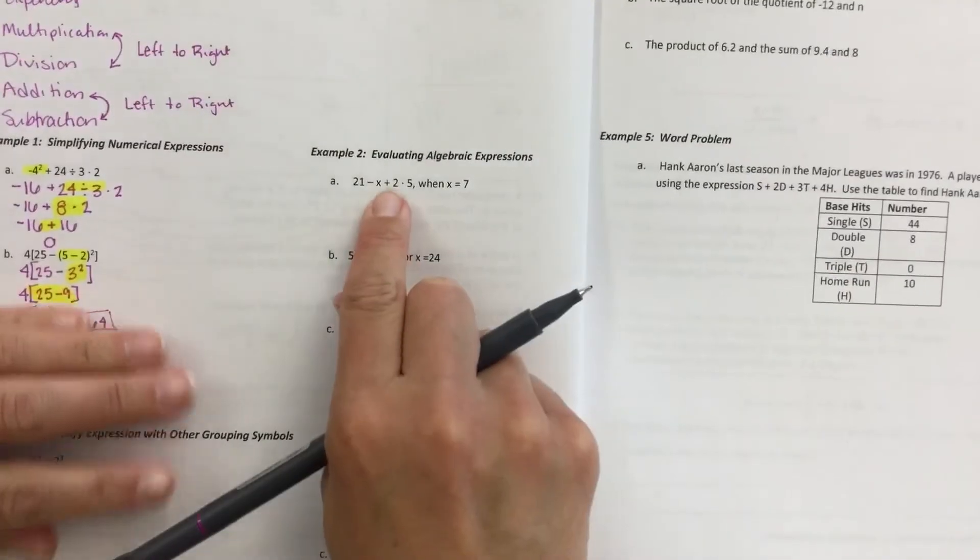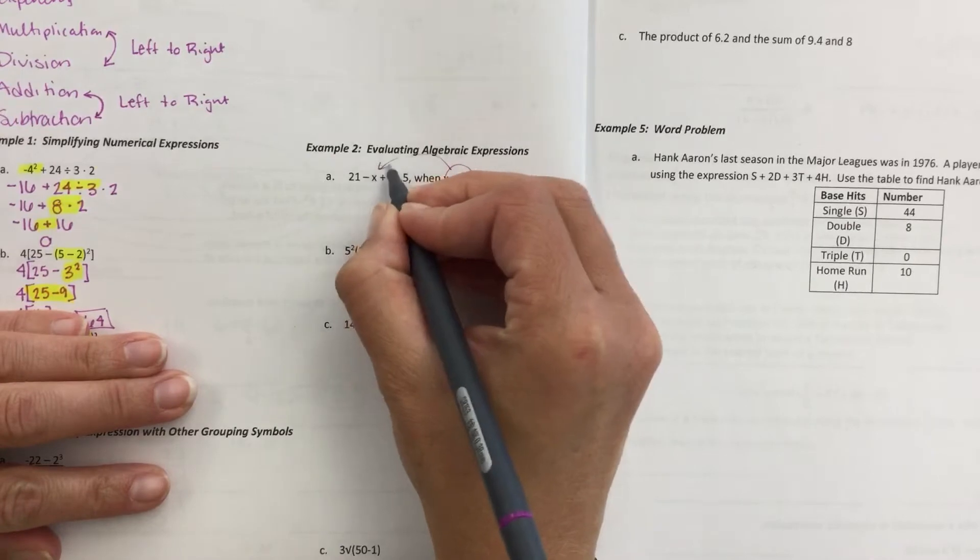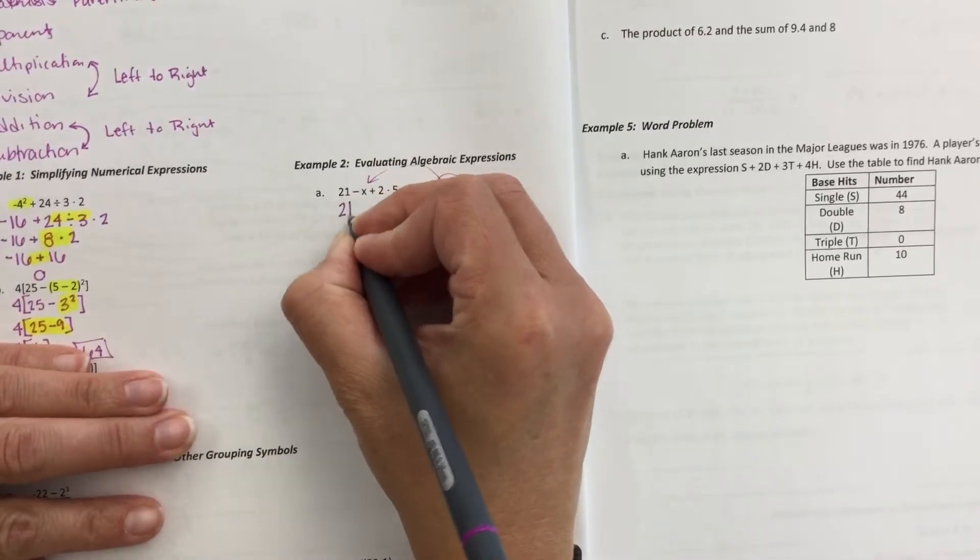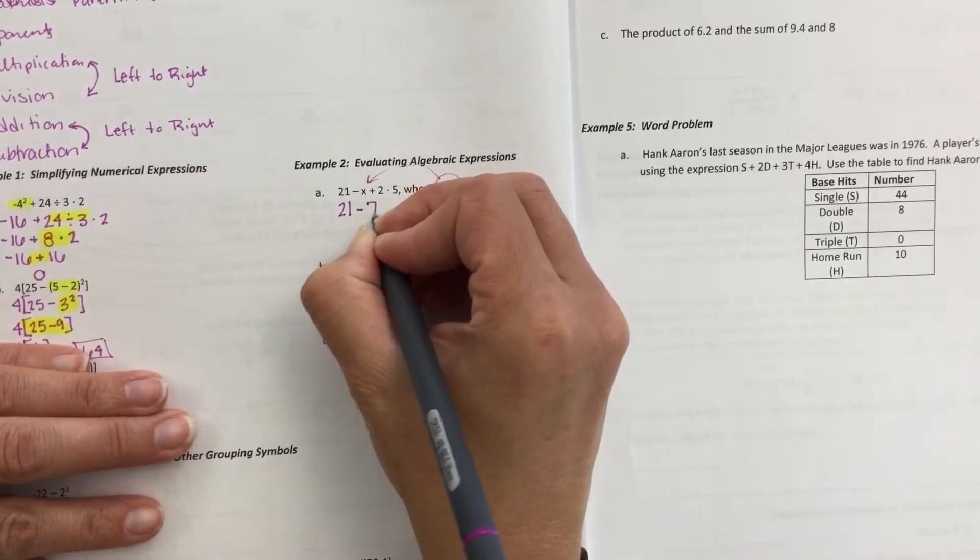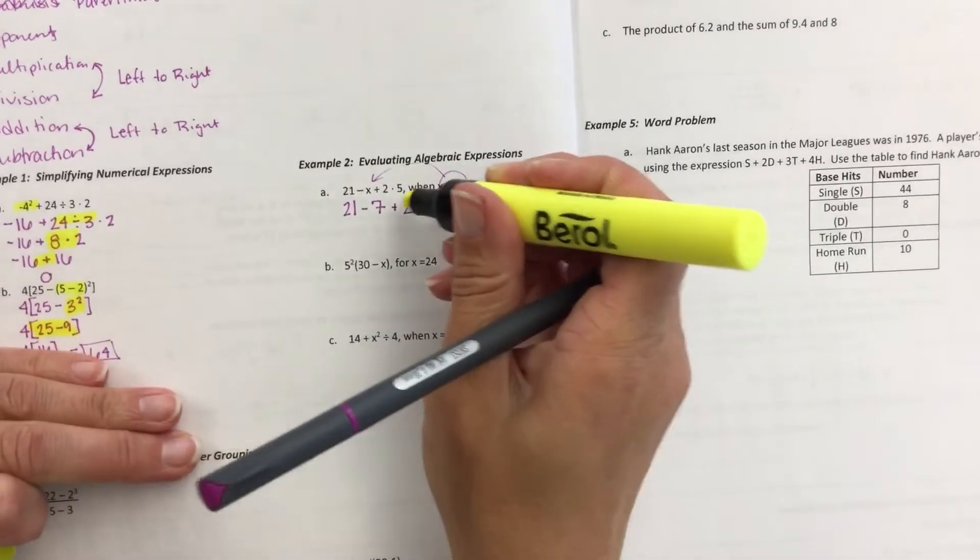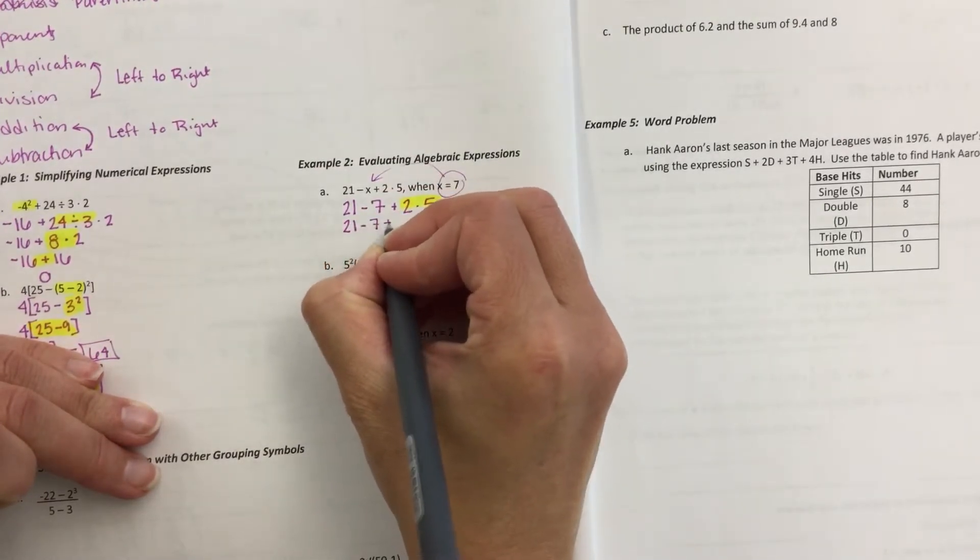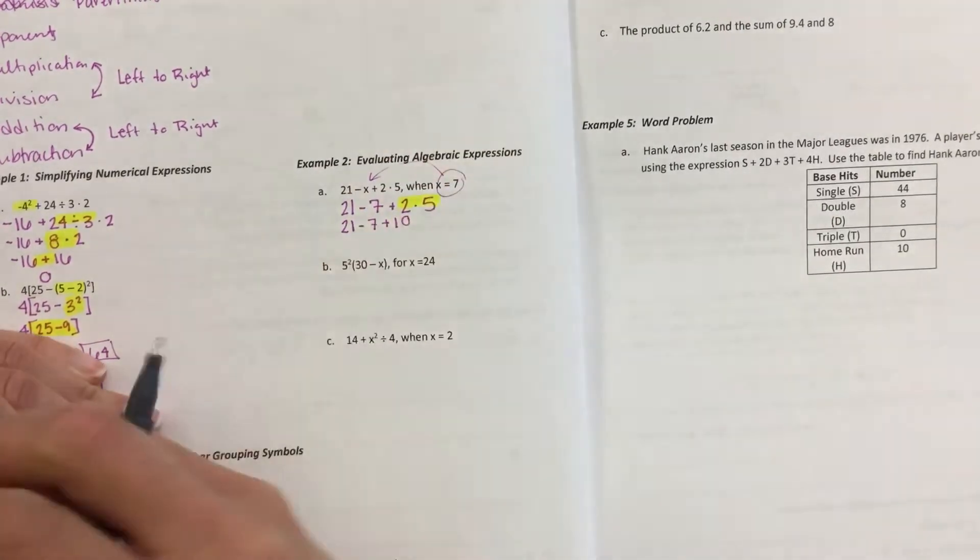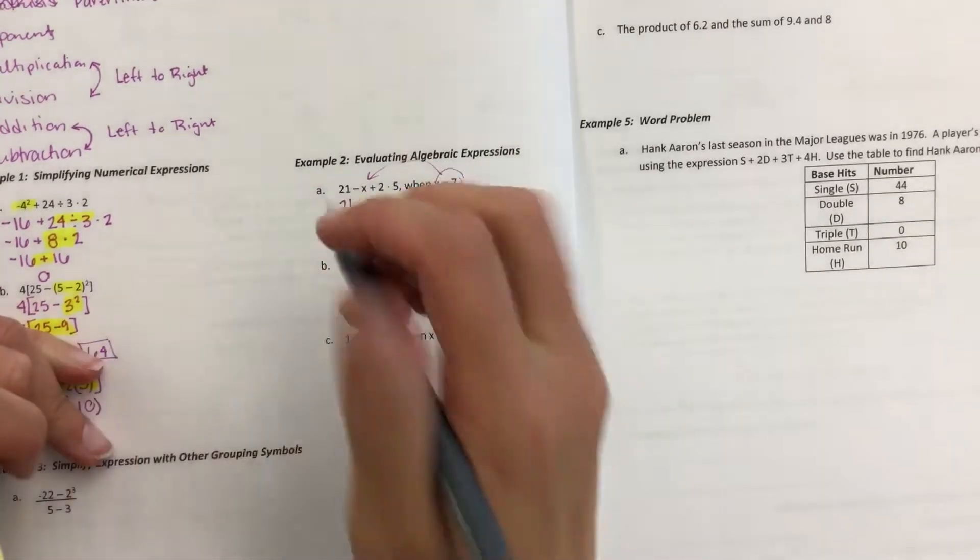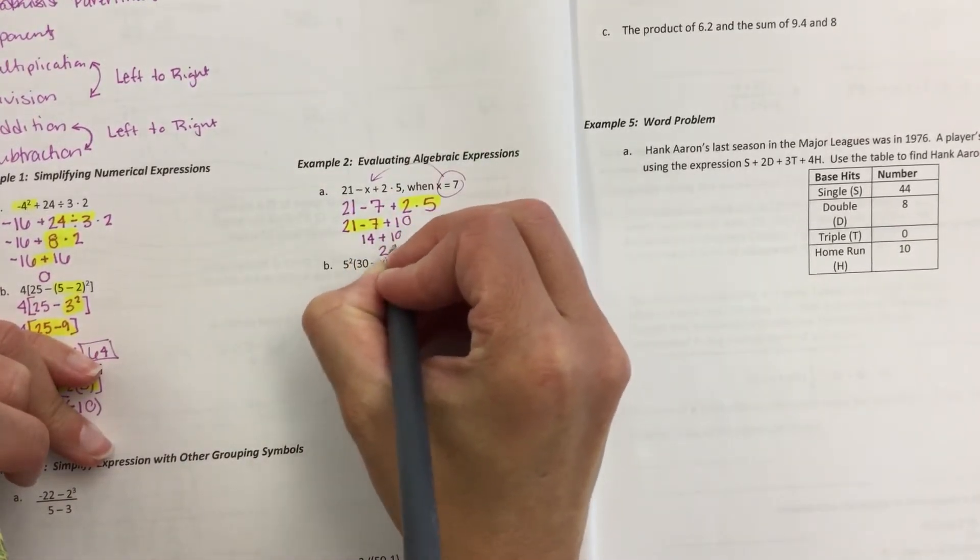So they also want you to be able to do this with substitution by putting a value in for x. Same difference. Instead of x, I'm putting a 7. You still follow all the rules. So first comes multiplication. 21 minus 7 plus 10. And then subtraction. 21 minus 7 is 14. Plus 10 is 24.